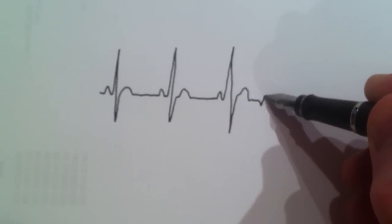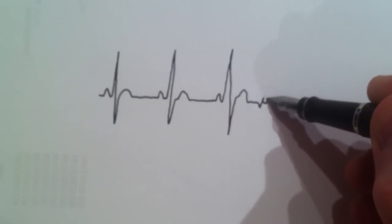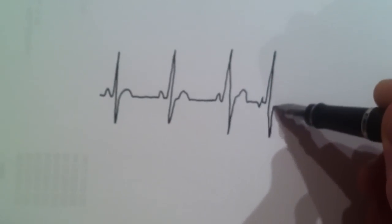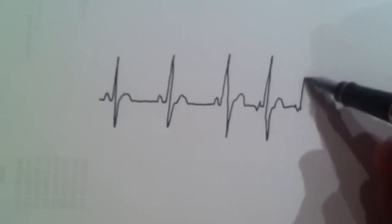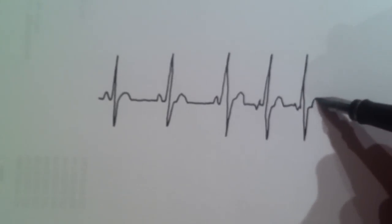And then there's an early beat, slightly different shape. P wave, QRS, looks the same. Recovery, that's an early beat. And then second early beat, so this is an ectopic beat.